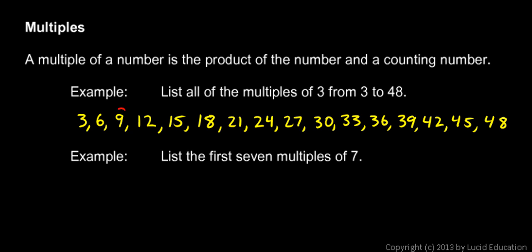That's 3 times 2. 3 times 3 gives us 9. 3 times 4 gives us 12. So you can see that this list of numbers here fits this definition: the product of a number and a counting number. Another way to think of it is what I said a minute ago, all of these numbers are evenly divisible by 3.